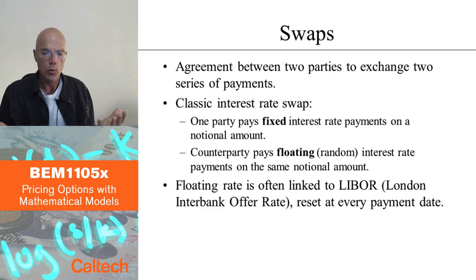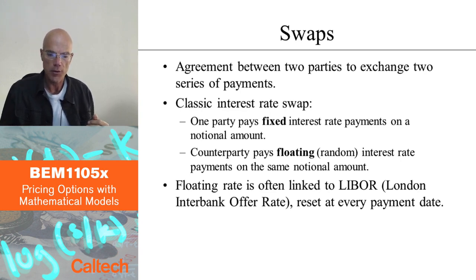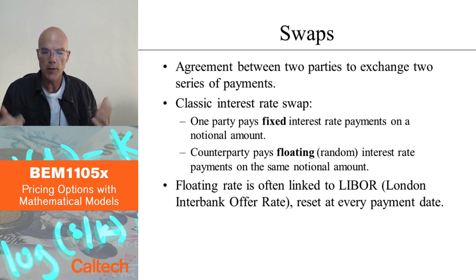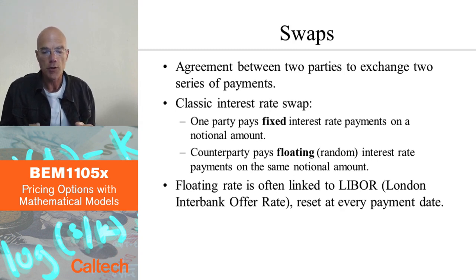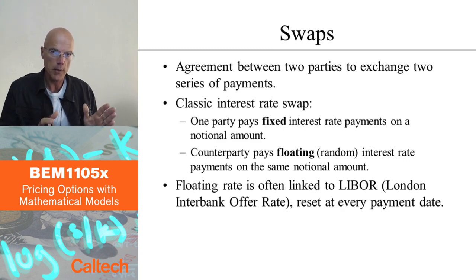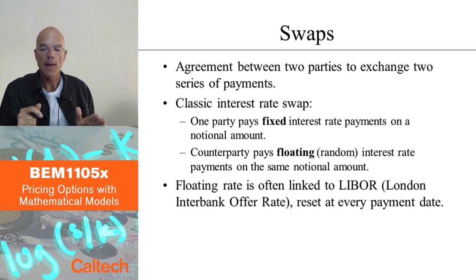So when would this be of interest to the party which is receiving random, or so-called floating, interest and paying fixed interest? Suppose you are a company or individual that enters a loan in which you have to pay floating interest based on some market rate, and you don't like randomness — you would rather know exactly how much you have to pay every month instead of having to pay a random amount.